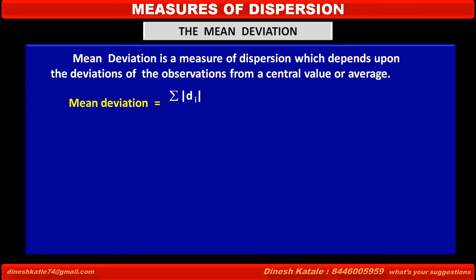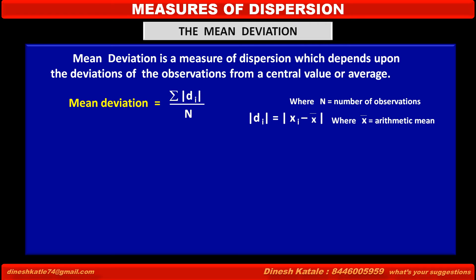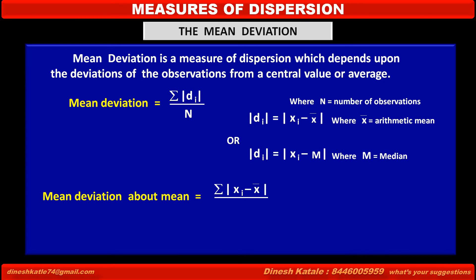Summation of the positive value of deviations upon n number of observations. In this case, the deviation |di| is equal to |xi minus x-bar|, where x-bar is equal to arithmetic mean, or di is equal to xi minus m, where m is equal to median.